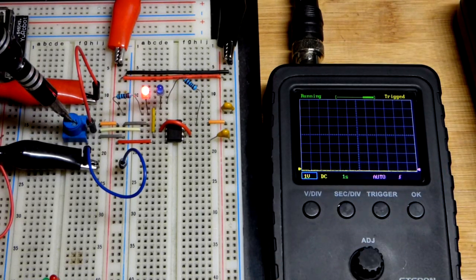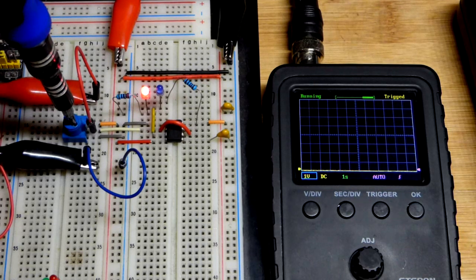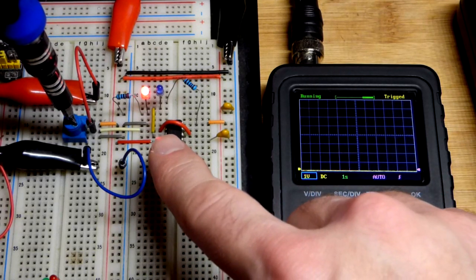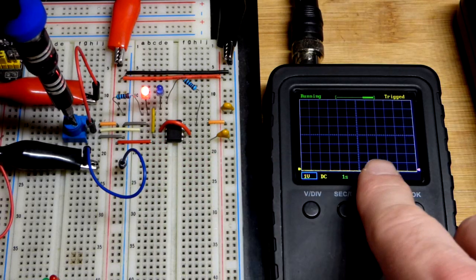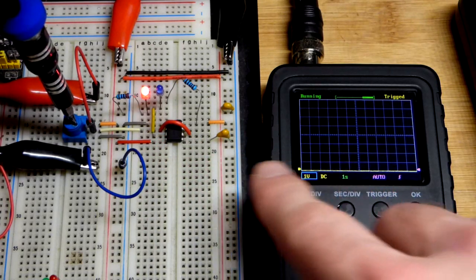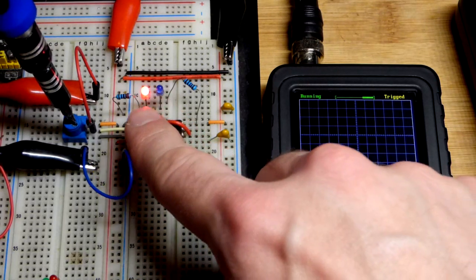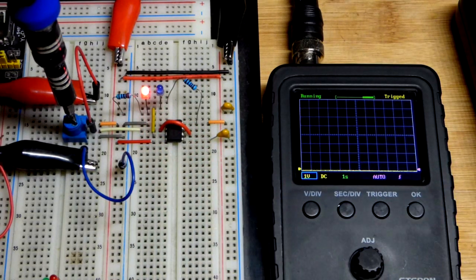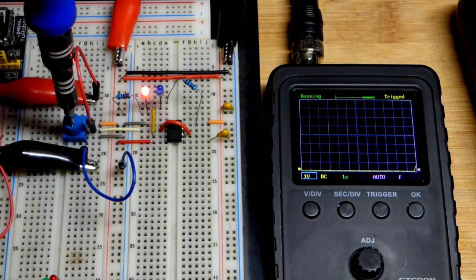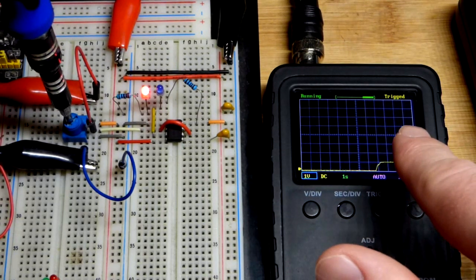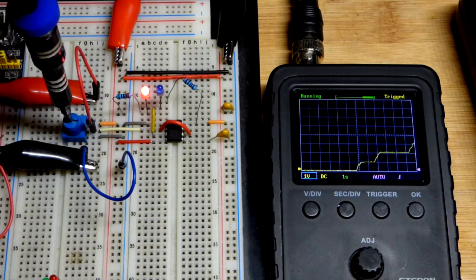We're not going to go into detail with that in this video. But in any case, right now the input is low. And so pin 2 saw that we were below one third of the supply voltage. It set the output high. We're going to the red LED there. The other side of the red LED goes to ground. And so we can raise the voltage to whatever we want up to the supply voltage which is 6 volts.